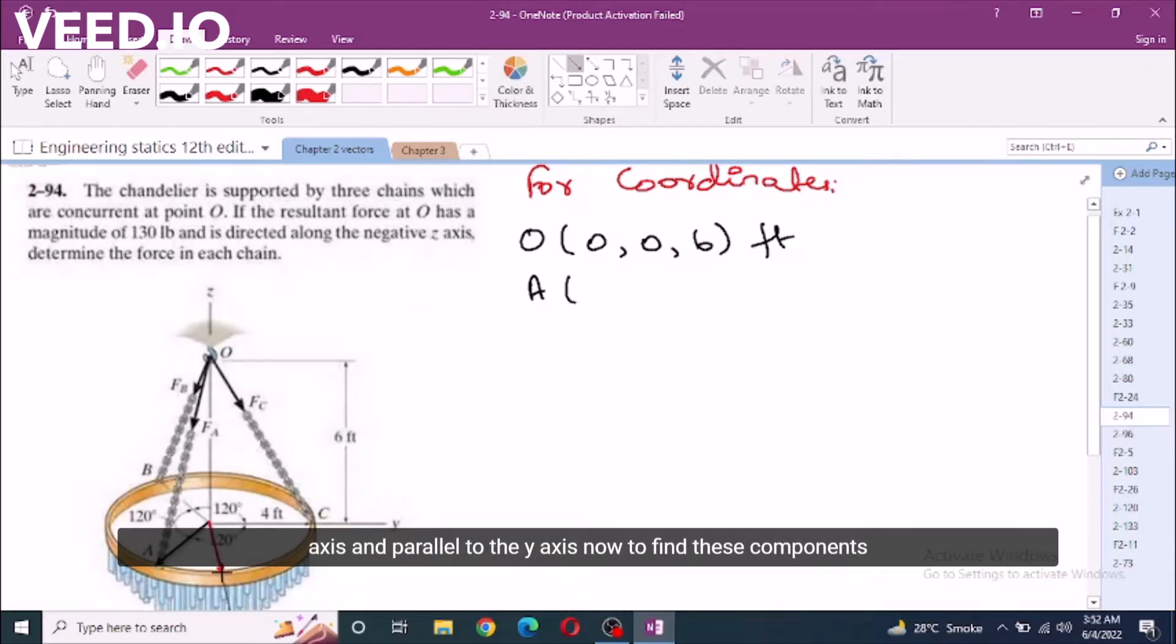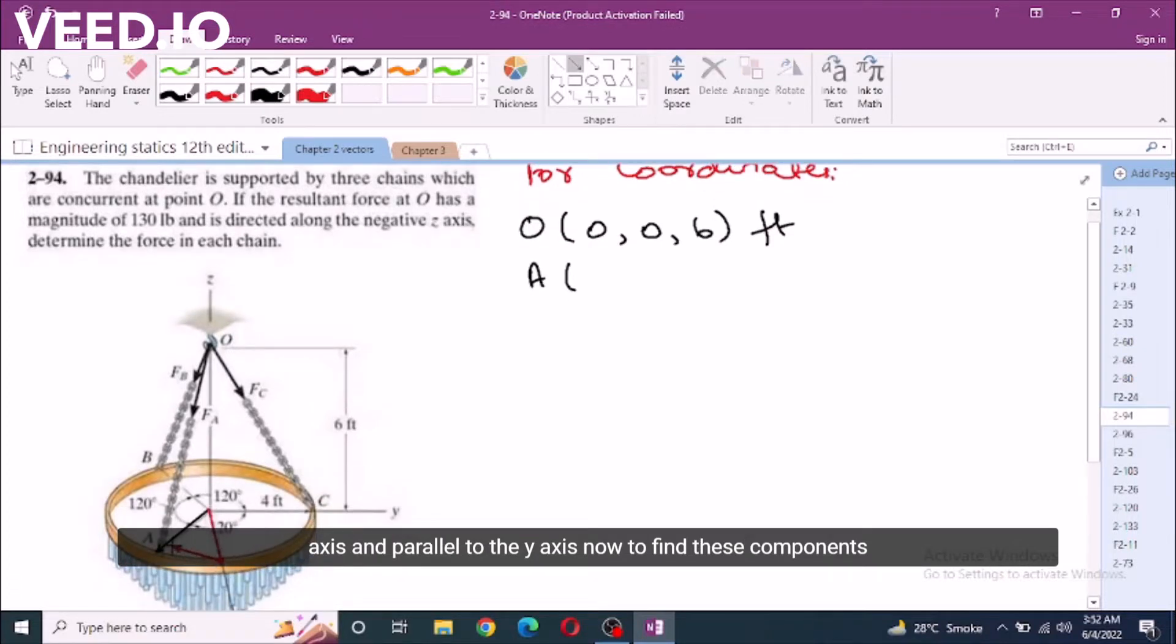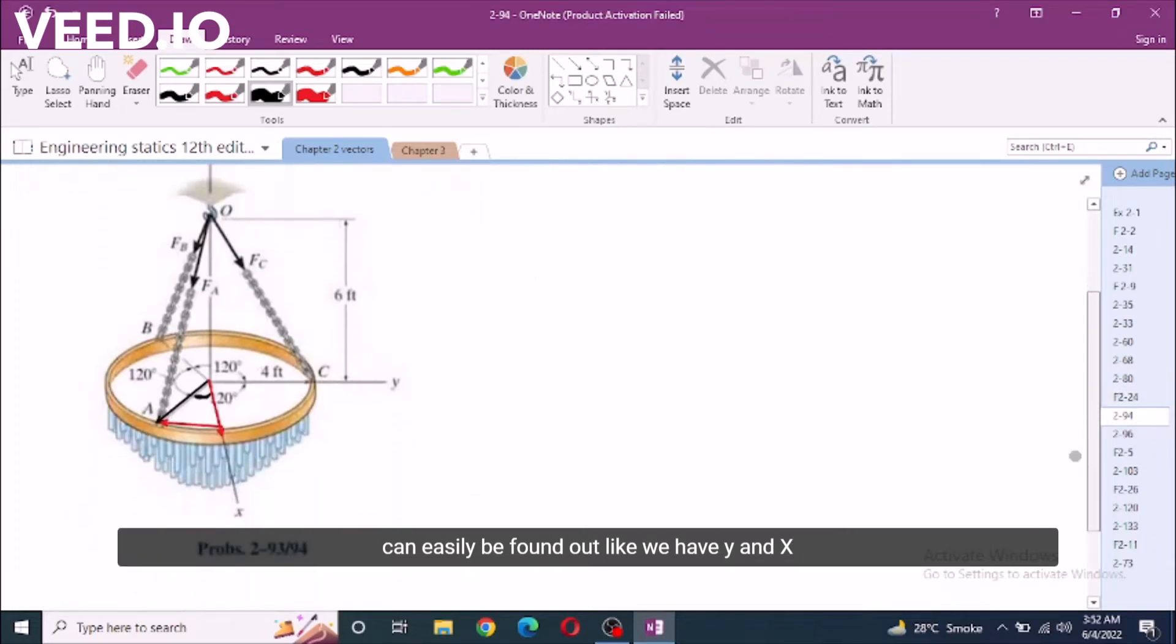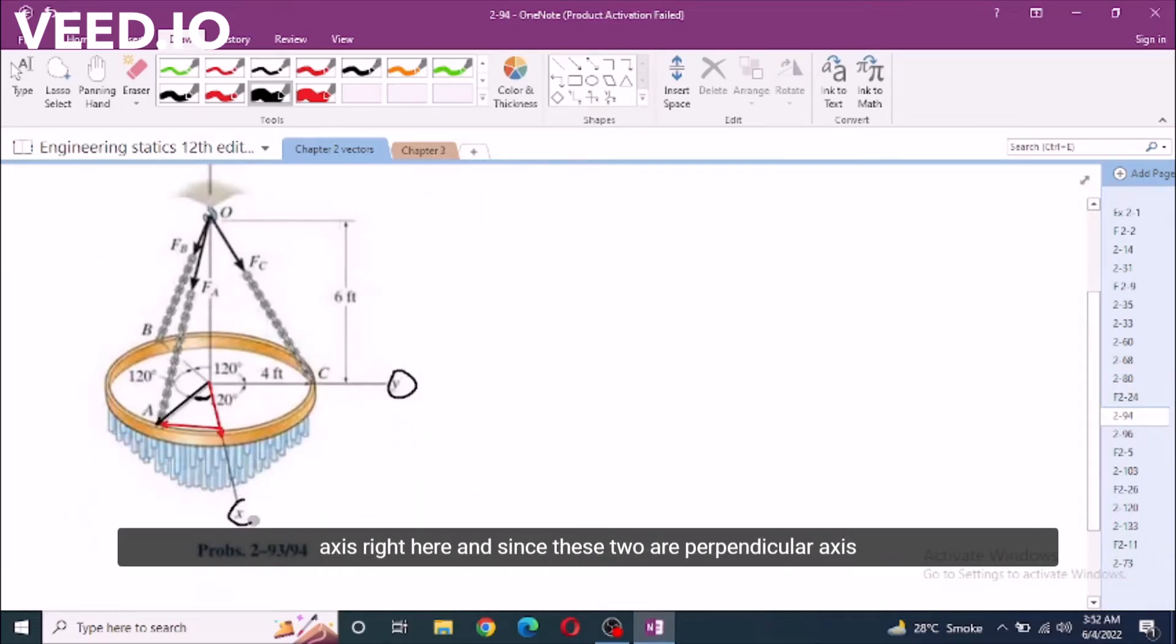Parallel to X-axis and parallel to Y-axis. Now, to find these components, I have to know this angle right here. Now, this angle can easily be found out. So we have Y and X-axis right here and since these two are perpendicular axes, I know that this theta is 120 degrees minus 90 degrees equals 30 degrees. So our angle is 30 degrees.